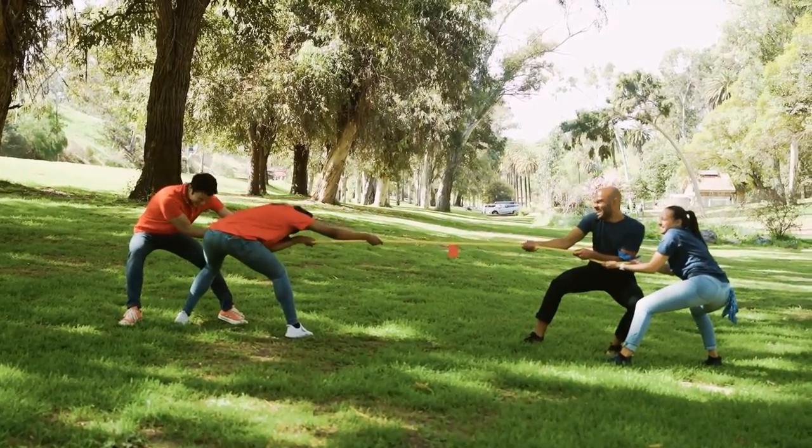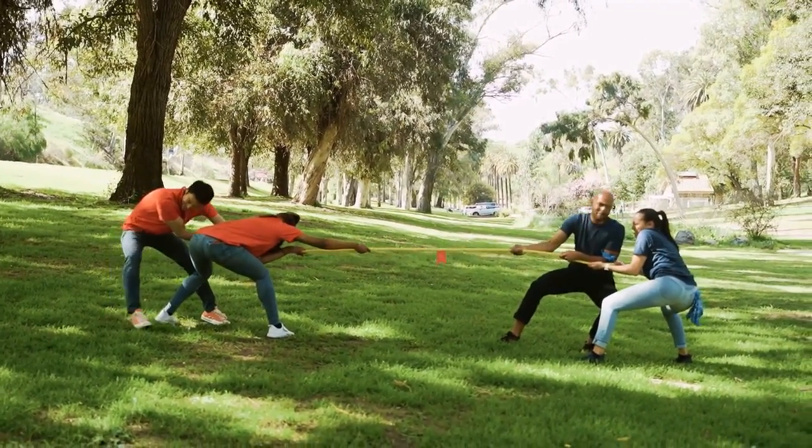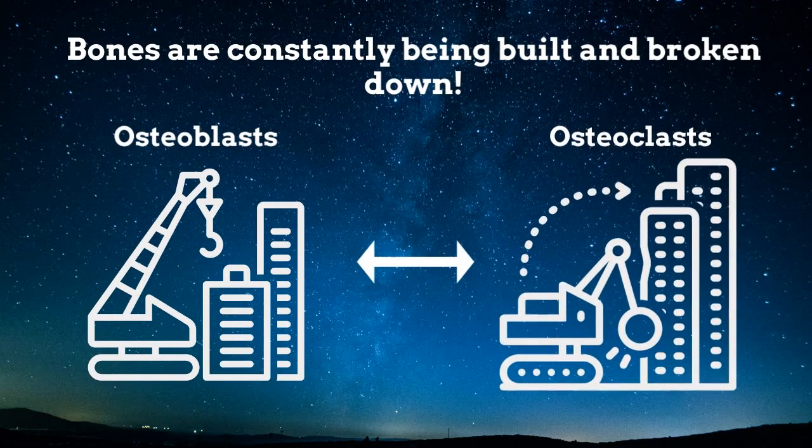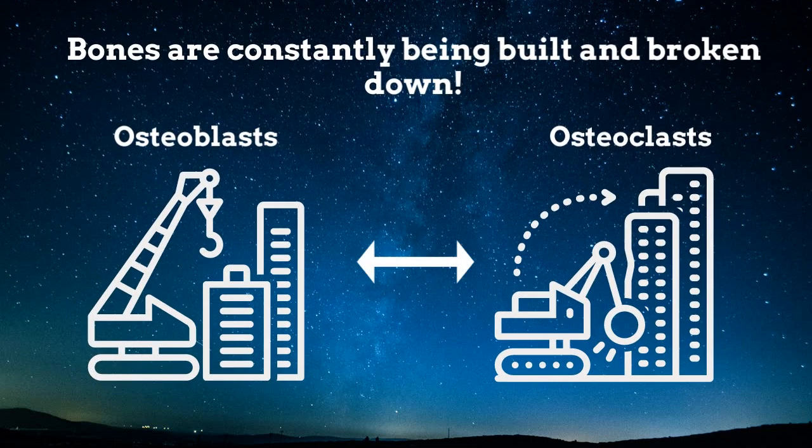Like tug of war, they work opposite to one another. These two types of cells, osteoblasts and osteoclasts, are constantly adding and removing collagen from our bones to maintain an optimal level of bone density throughout all the bones in our bodies.